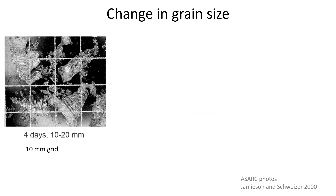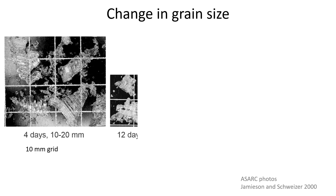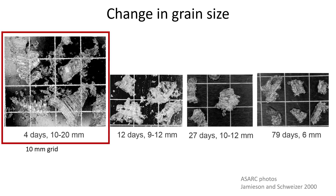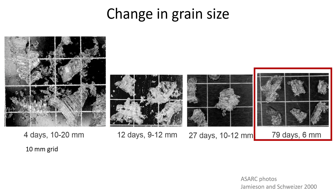Numerous field studies have shown that if you return to the same site and extract crystals from the same surface oar layer, you see smaller crystals over time. The extracted pieces of surface oar crystals get smaller over time, likely due to the surface oar crystals penetrating and bonding to the adjacent layers more and more. In this example, the crystals were 10 to 20 millimeters four days after burial. 79 days after burial, the carefully extracted pieces were only 6 millimeters in size, and they look like pieces rather than complete crystals.